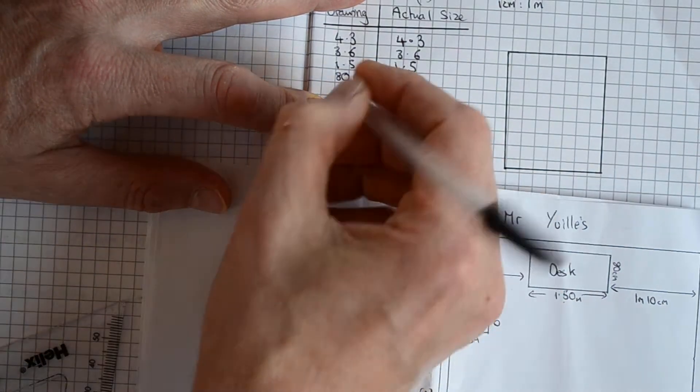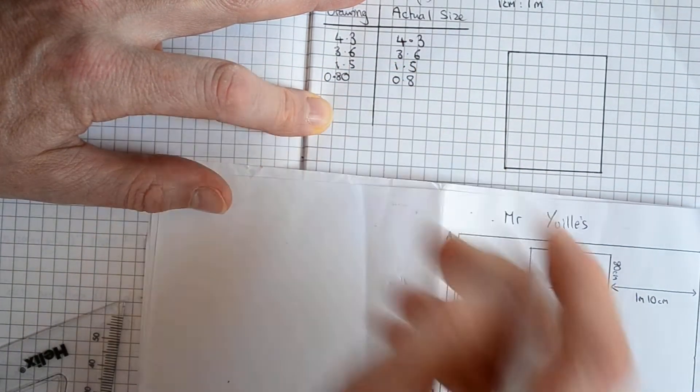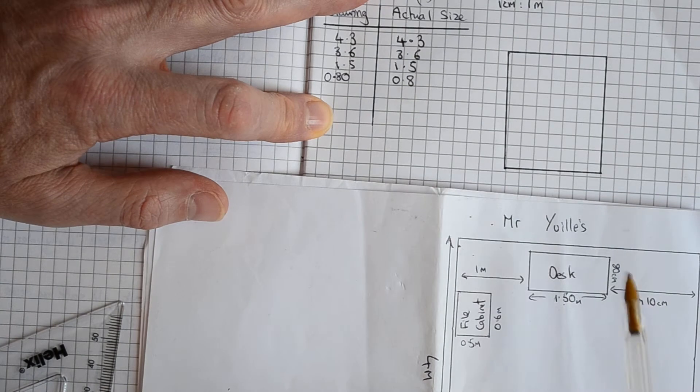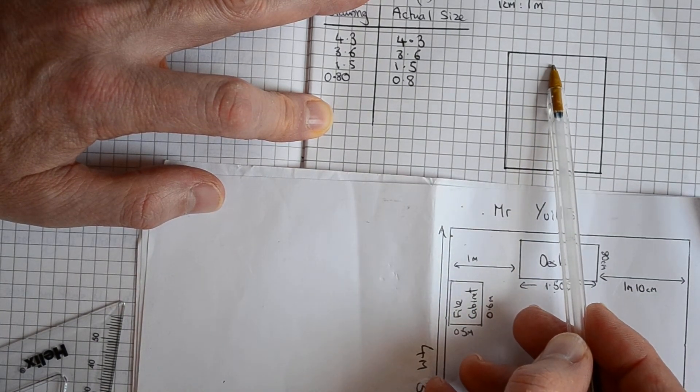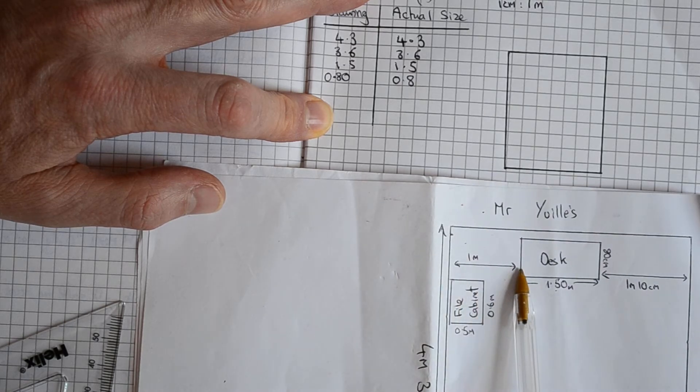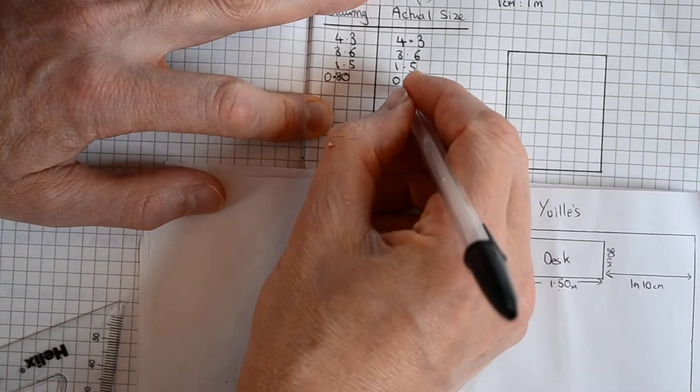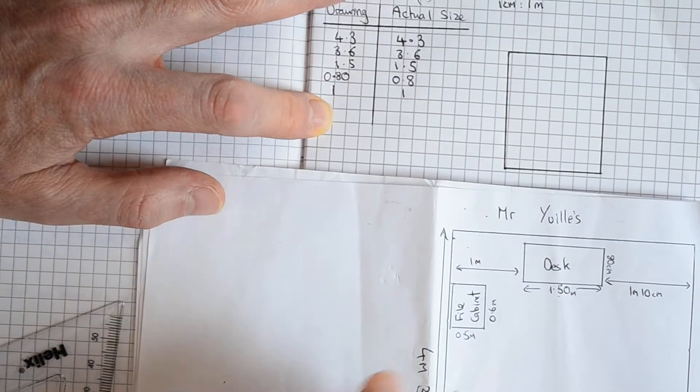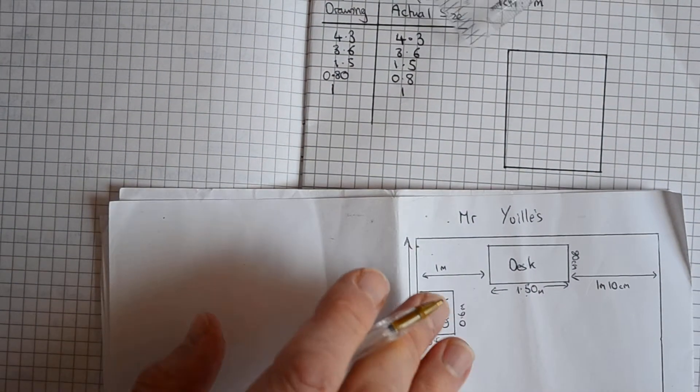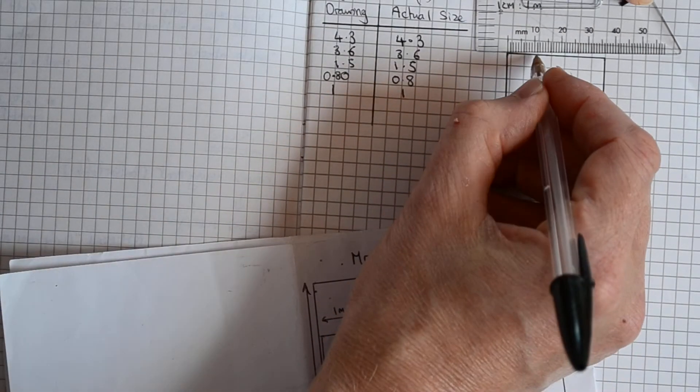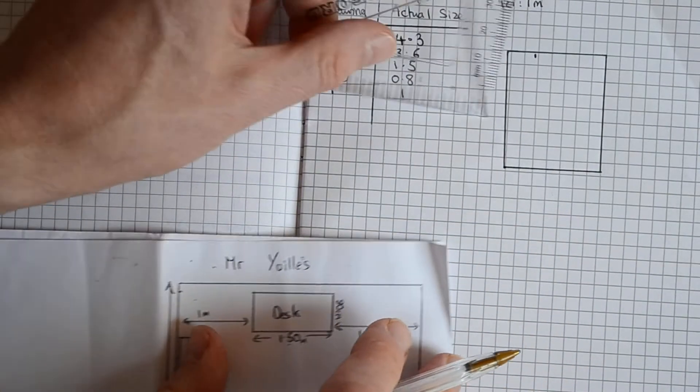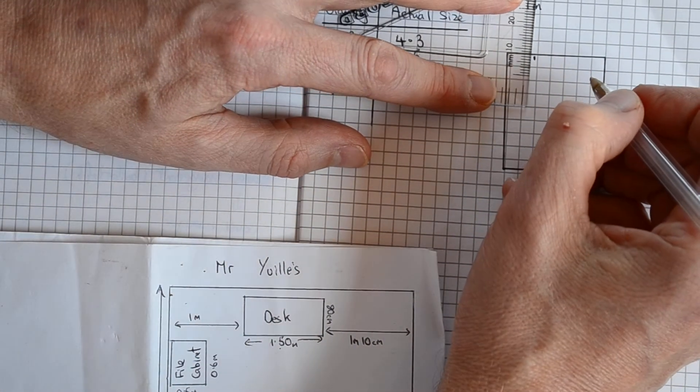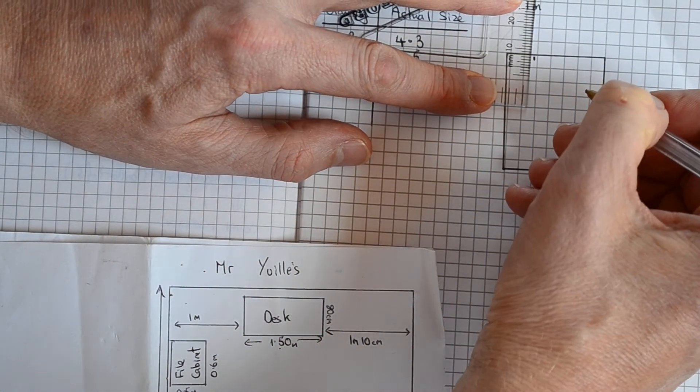Now where I'm going to draw it, it's somewhere at this end of my workspace and I can see it's one meter in from the edge, so it's going to be 1 centimeter in from the edge. So I'll measure in that centimeter, there we go. So it's going to be there. Then I want it 0.8 meters coming out of the wall, so that's 0.8 centimeters.